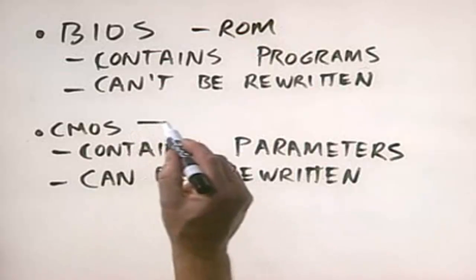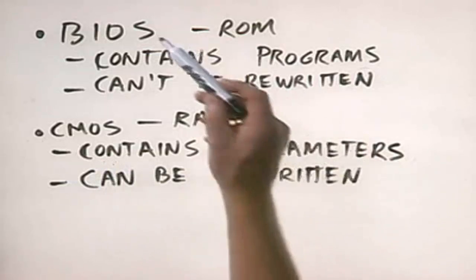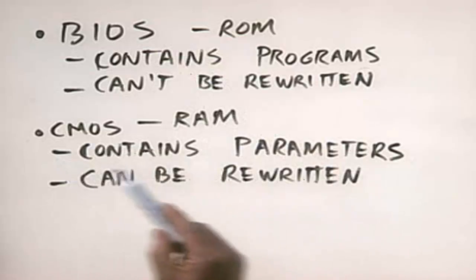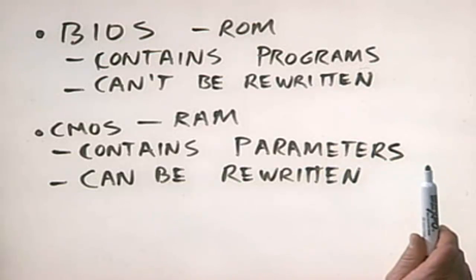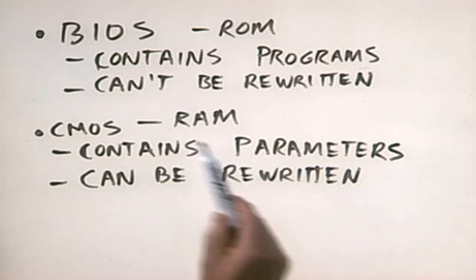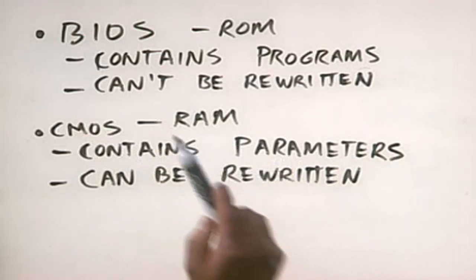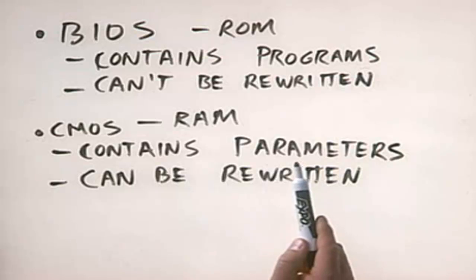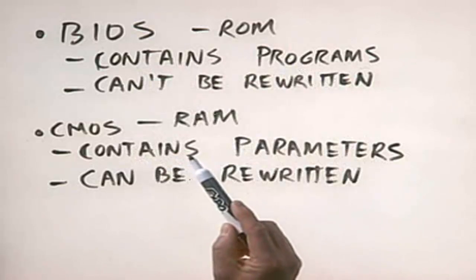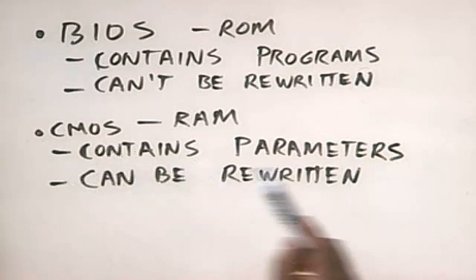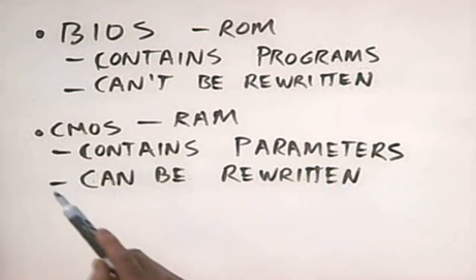The CMOS, on the other hand, is RAM — random access memory. The CMOS contains the parameters these programs need in order to access certain devices. For example, if we add a new hard drive with different parameters than before, we update the CMOS with the new parameters. Then when the CPU needs to access the hard drive, it loads the appropriate programs from the BIOS, and those programs check the CMOS to find how to get to the right location. Whenever you add a new component, you can change the values stored in the CMOS.